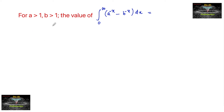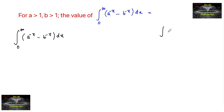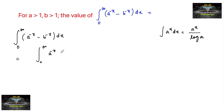For a greater than 1 and b greater than 1, find the value of the integral from 0 to infinity of (a to the power of minus x minus b to the power of minus x) dx. We split this into: integral 0 to infinity of a to the power of minus x dx, minus integral 0 to infinity of b to the power of minus x dx.